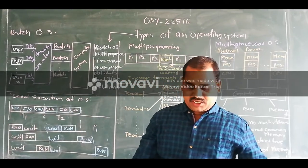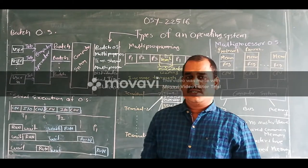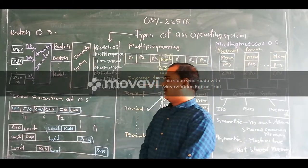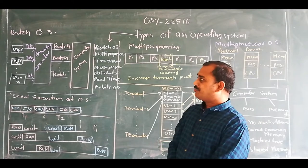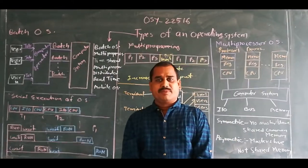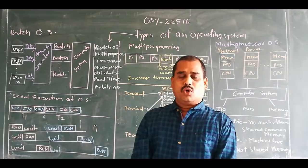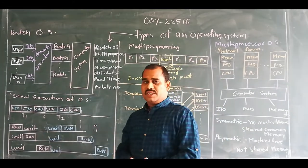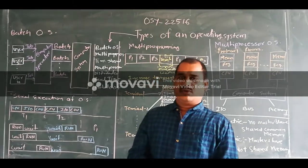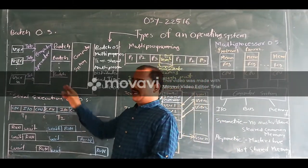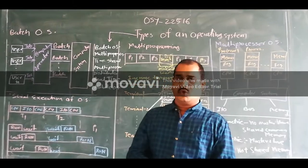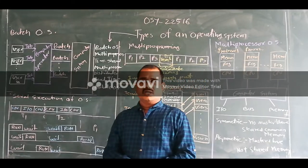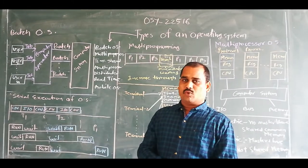So let's start the batch operating system. This diagram describes the batch operating system. Basically, the batch operating system is the oldest type of an operating system, where only large programs or large data will be accessed. It is a non-interactive system, so here the user can't directly interact with the operating system as well as the program.